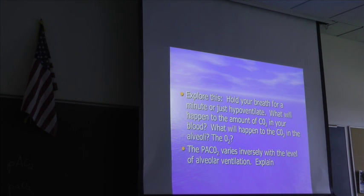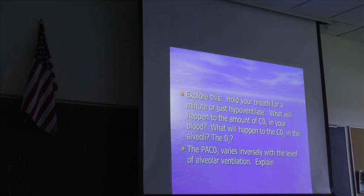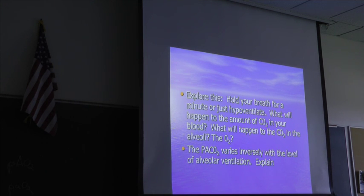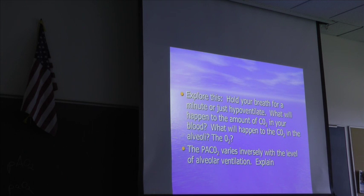Write: hypoventilate — H-Y-P-O — ventilate. PaCO2 arrow up, meaning it increases. PaO2 arrow down, meaning it decreases. The pressure of oxygen in the arterial blood decreases. Then write: hyperventilate — H-Y-P-E-R — ventilate. PaCO2 arrow down — decreases. PaO2 arrow up — the pressure of oxygen in the arterial blood increases. Both a's are little a's, meaning arterial.